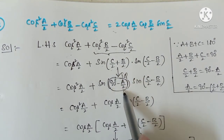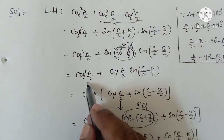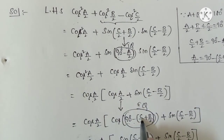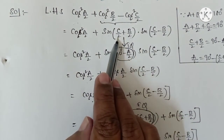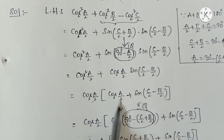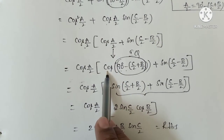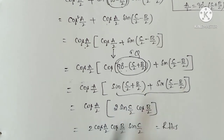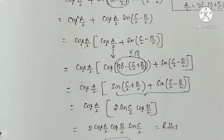To recap the second problem: b by 2 plus c by 2 is replaced by 90 minus a by 2. When there is 90 degrees, sin will be converted to cos. In the second step, we take cos(a by 2) as common. Then we replace a by 2 by 90 degrees minus (c by 2 plus b by 2). For 90 degrees again, cos converts to sin, giving sin(c by 2 plus b by 2) plus sin(c by 2 minus b by 2). Applying sin(a plus b) plus sin(a minus b) equals 2 sin a cos b, and multiplying, we get 2 cos(a by 2) cos(b by 2) sin(c by 2). This is the answer.